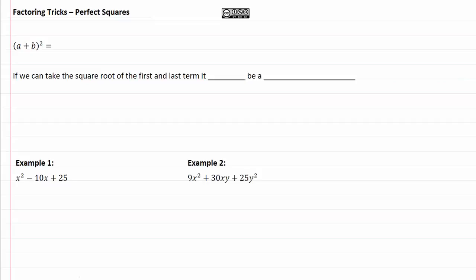Factoring tricks, perfect squares. You may recall that if we have a binomial that was squared, we got a squared plus 2ab plus b squared.